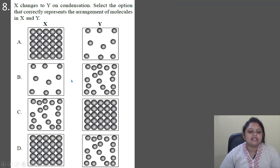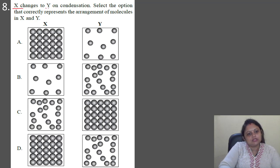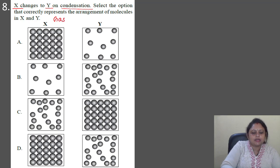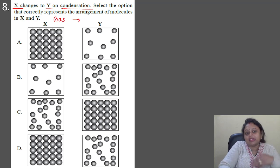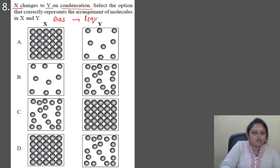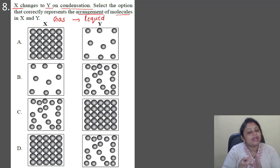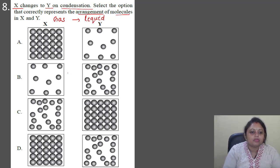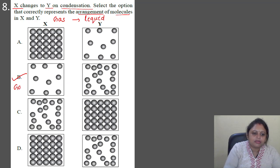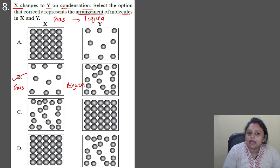Next question: X changes to Y on condensation. Select the option that correctly represents the arrangement of molecules in X and Y. In condensation, a substance changes from gaseous state to liquid state. In the gaseous state, particles are far apart from each other, and in the liquid state, particles are comparatively closer. So option B is correct — the diagram showing particles far apart represents the gas (X), and particles closer together represents the liquid (Y).